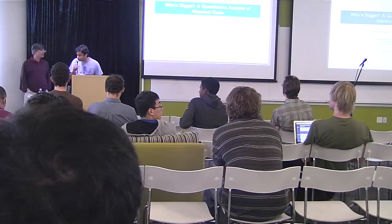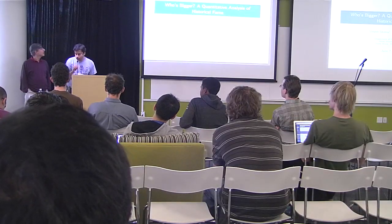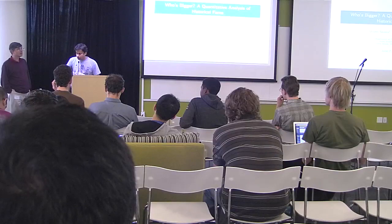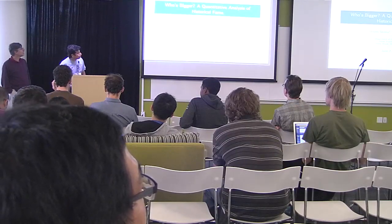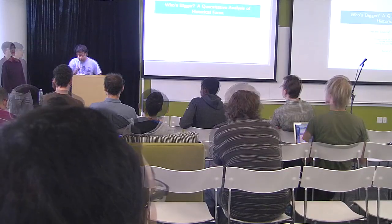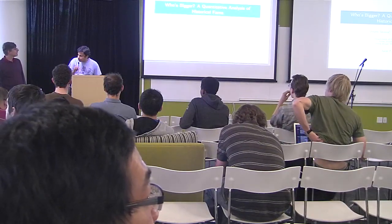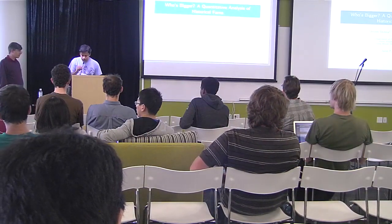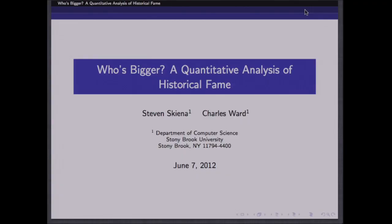It's my pleasure to introduce Dr. Steven Skiena, who is a distinguished professor of computer science at Stony Brook University, New York. He's here to talk about 'Who Is Bigger: Quantitative Analysis of Historical Fame.' He has published over 130 papers in computational geometry, computational biology, graph theory, and data mining. He's also the author of four books, including the Algorithm Design Manual, which is quite popular within Google and elsewhere. Lastly, he's also the co-founder and chief scientist at General Sentiment, a media measuring company. Without further ado, I'll get Professor on the podium.